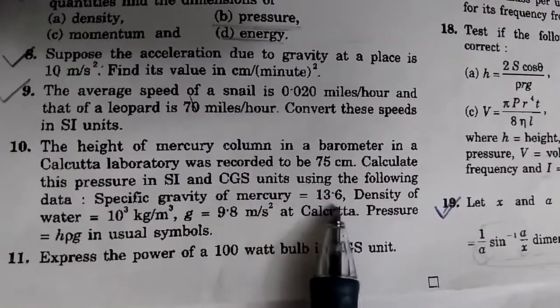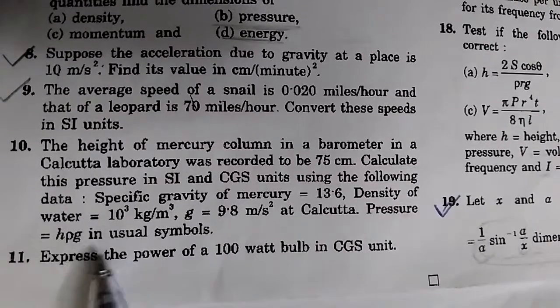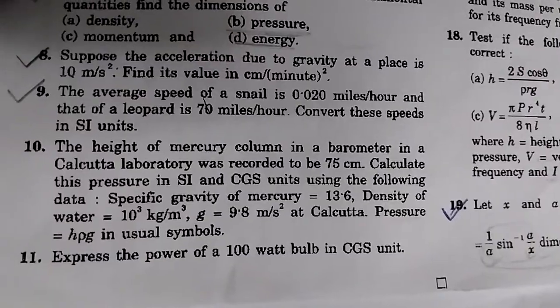Mercury specific gravity is given, density of water is given, G is given, and the pressure is equal to H rho G in usual symbols. I will suggest that you take a look at one of my videos about the column of the mercury and its pressure.